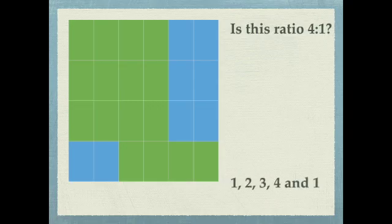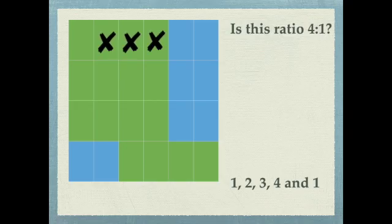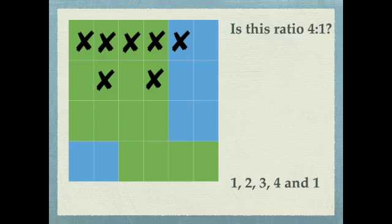The easiest way to count is just go 1, 2, 3, 4, switch, 1, 2, 3, 4, 1. So let's just do that together. 1, 2, 3, 4, switch, 1, 1, 2, 3, 4, switch, 1.